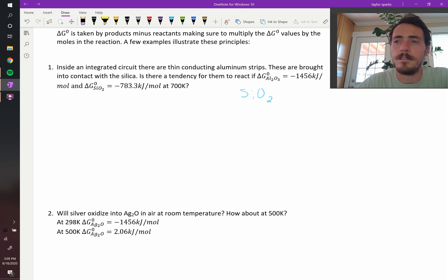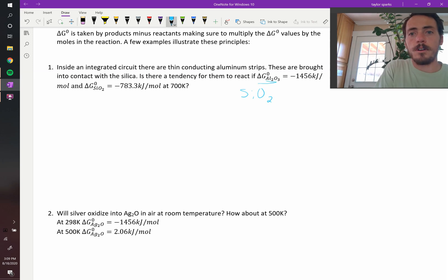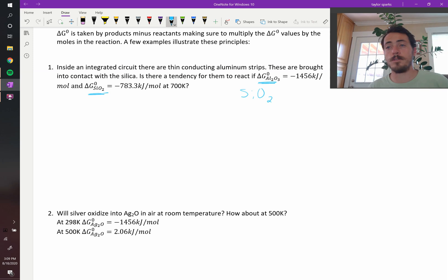It says, would there be a tendency for them to react if the free energy of formation under standard conditions is equal to negative 1456 kilojoules per mole for alumina and negative 783.3 kilojoules per mole for silica. And both of these values are at 700 Kelvin. Those are not general values. Those exist as a function of temperature.